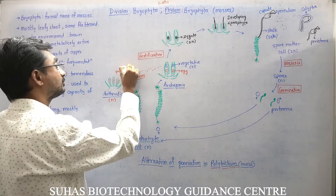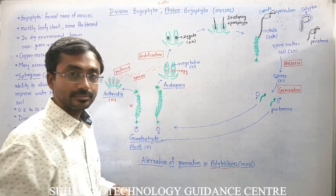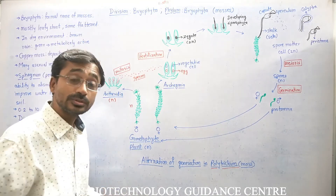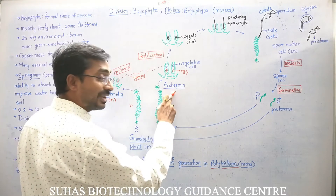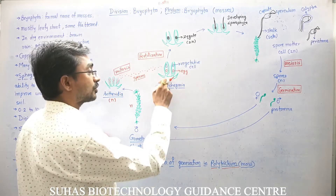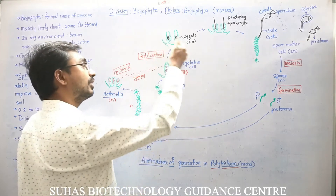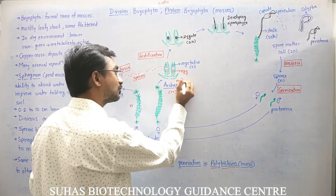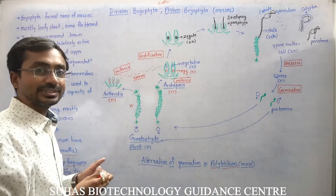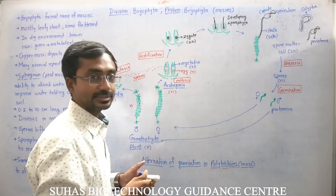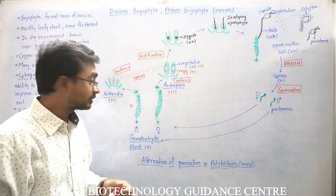This is the female plant, and on the top you find archegonia. Morphologically, male and female plants look the same, but there is a minor difference at the top — archegonia are formed in the female plant. Archegonia are haploid, so the egg is formed by mitosis and is also haploid. Most mosses also contain vegetative cells inside the archegonia, which are likewise haploid.